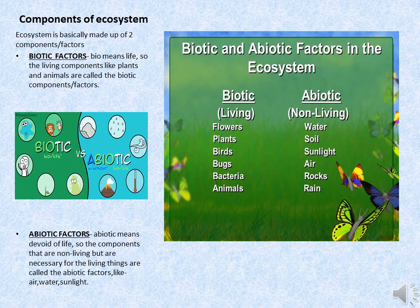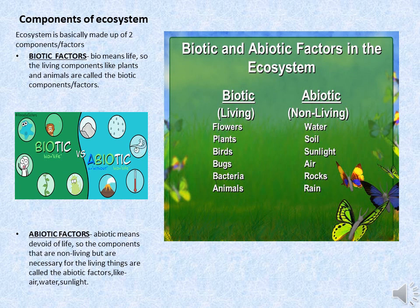The abiotic factors — abiotic means lifeless or without life. The abiotic components are the non-living things present in that environment at a particular place, which are essential for the development of biotic components. So we can clearly say that biotic and abiotic together make up an ecosystem.